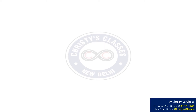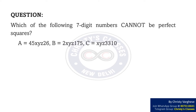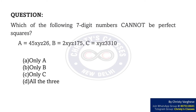In this video, we are going to solve the question: which of the following 7-digit numbers cannot be perfect squares? A = 45xy326, B = 2xy175, C = xy3310. The options are: option A — only A, option B — only B, option C — only C, and option D — all the three.